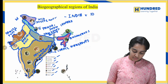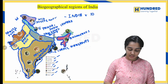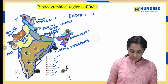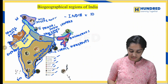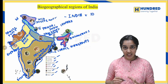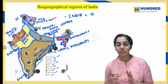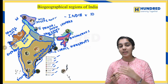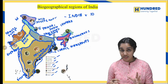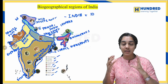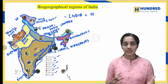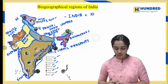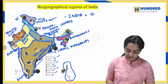Next is the Western Ghats, shown in yellow on the west side of India, extending from Gujarat to Kerala. The Nilgiri Thar, which is the state animal of Tamil Nadu, is present in the Western Ghats. It is a dense forest area ranging from evergreen forest to dry deciduous forest.